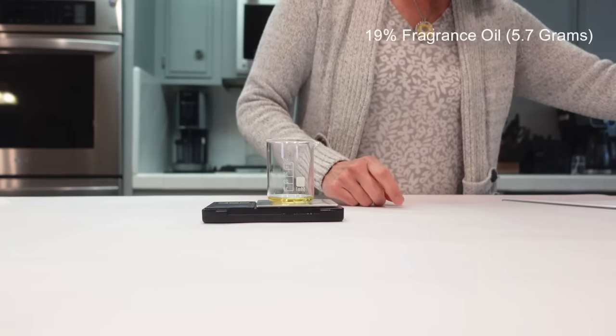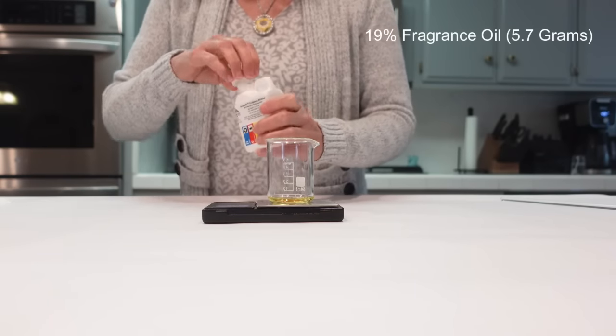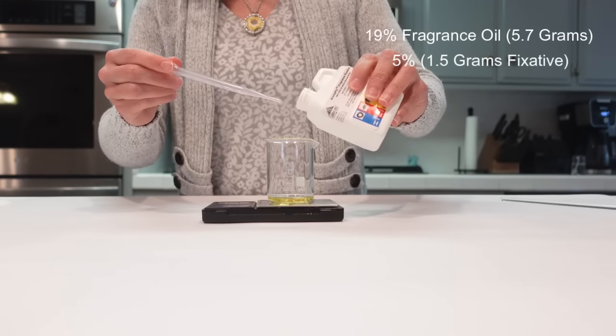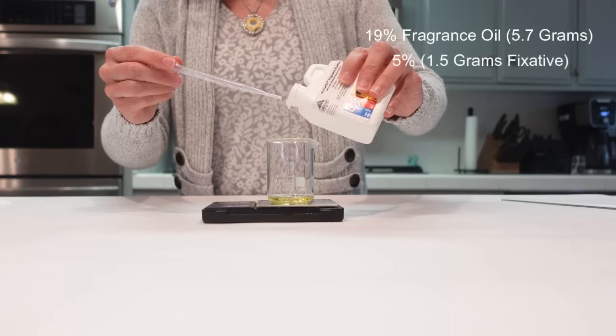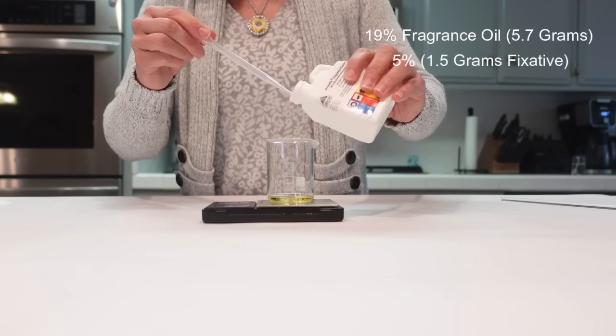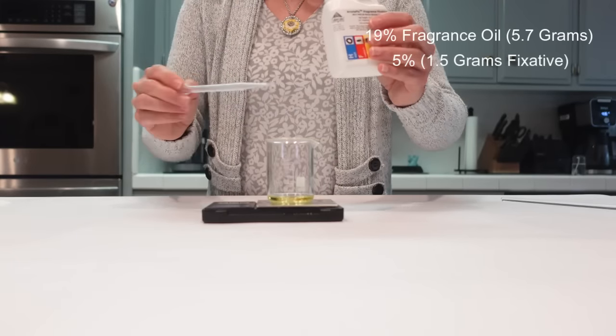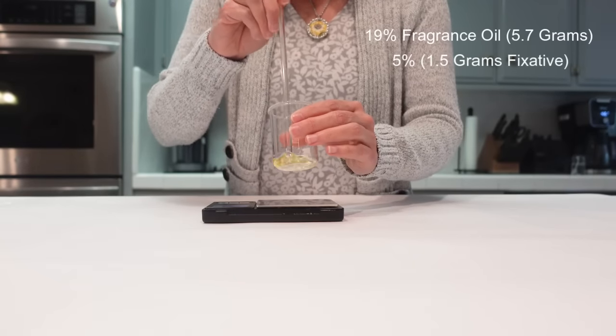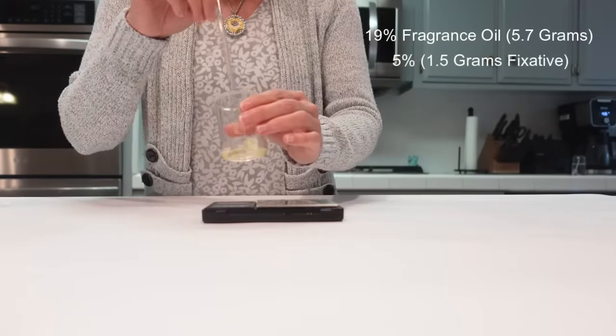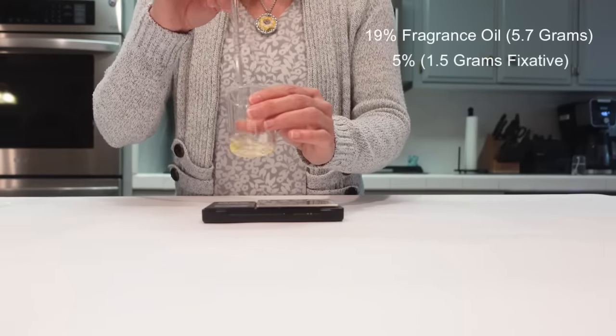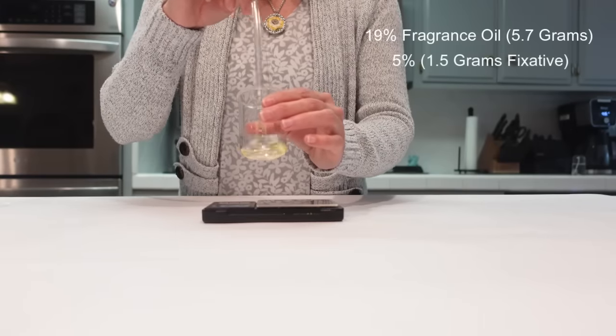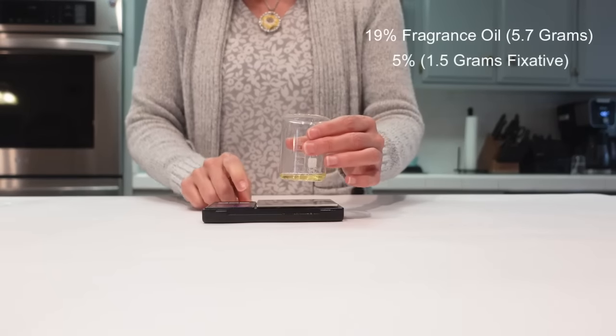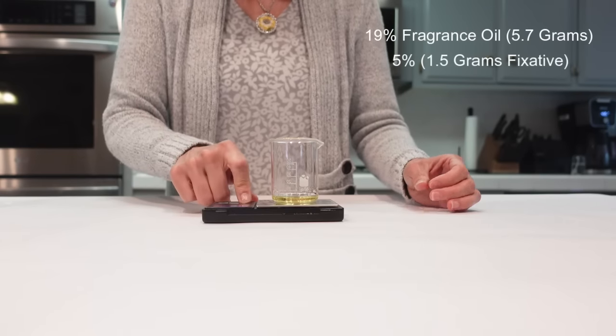Next, I'm going to go ahead and add in my fixative again. And we're using the fixative again at 5% of the formula. So that's 1.5 grams of fixative for 30 grams of perfume. There we go. Then I'm going to take a clean stirring rod. Again, give this a little bit of a mix. Just to make sure they get combined, I like to do that first.